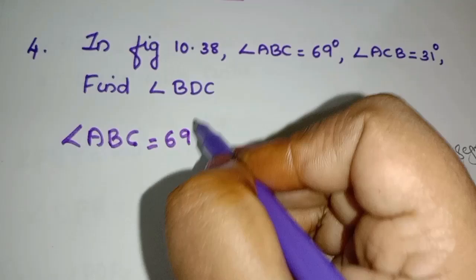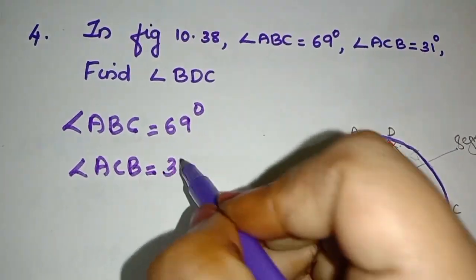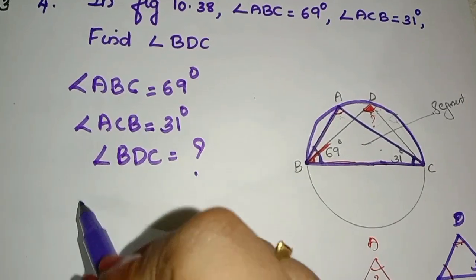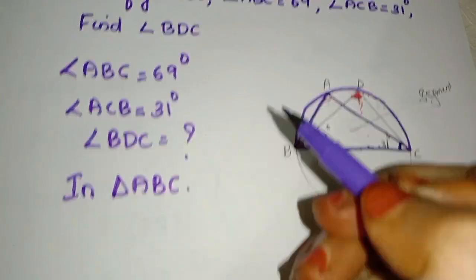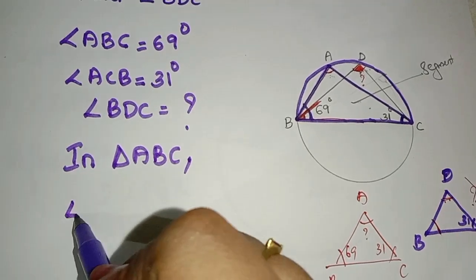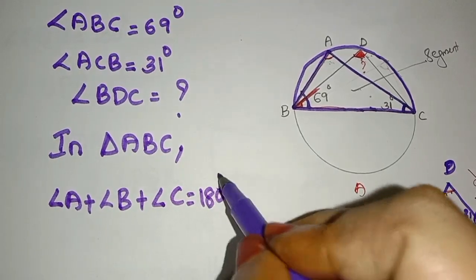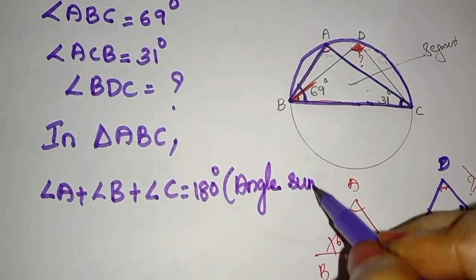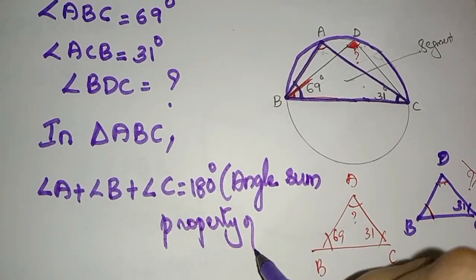Angle ABC is equal to 69 degrees, angle ACB is equal to 31 degrees. We need to find angle BDC. In triangle ABC, angle A plus angle B plus angle C is equal to 180 degrees, by the angle sum property of a triangle.